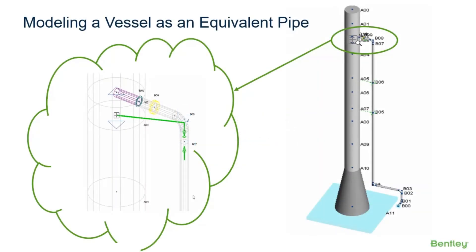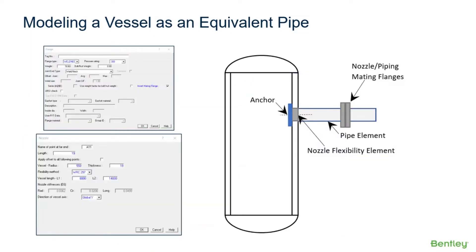Method 2 is modeling a vessel as an equivalent pipe. When we model the vessel as an equivalent pipe, the first step is the same as when modeling the vessel as an anchor.